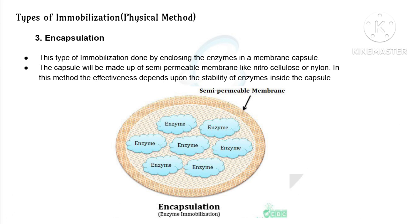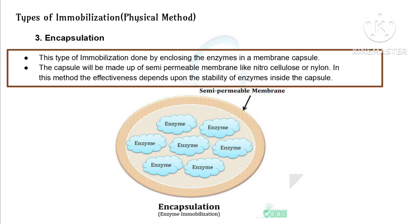In physical immobilization — encapsulation — no bonds are needed. This type of immobilization is done by enclosing the enzymes in a membrane capsule made of a semi-permeable membrane like nitrocellulose or nylon. The effectiveness of this method depends upon the stability of the enzyme inside the capsule. This completes physical immobilization.